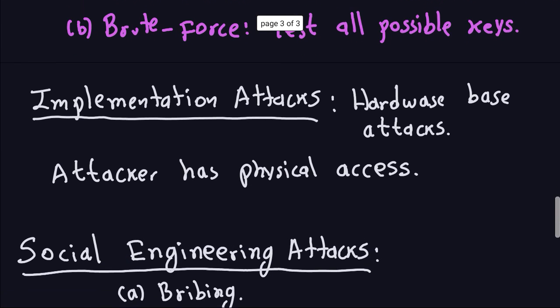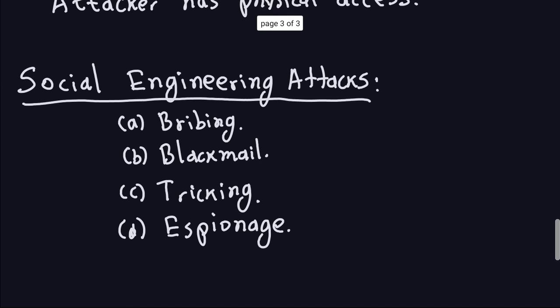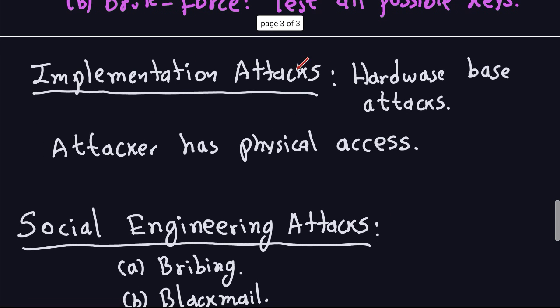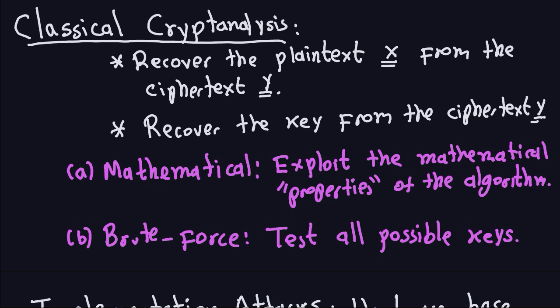The other type is social engineering attacks. Bribing is one of them — somebody can bribe you to give out the password to decrypt it. Or they can blackmail you, trick you into giving your password or key, or simply use espionage. They can also call a company — this has happened many times — saying 'I'm in the IT department, please give me your password, we need to update something.' These are the big parts of cryptanalysis. We are not going to do any social engineering or implementation attacks in this course since those are hardware-based. If we discuss cryptanalysis here, it will be either mathematical analysis or brute force attack.